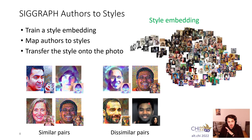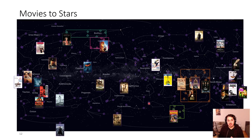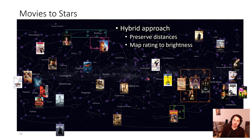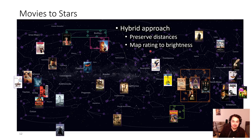We have many more examples in the paper, but now I'll jump to the best example in my opinion: the movies-to-stars metaphor. Here we have taken the top movies and mapped them to stars in the night sky, producing a large infographic. But this is not just a distance-based metaphor — it's a hybrid approach. We preserve distances like before, so similar movies get mapped to nearby stars. But we also ensure that movies with high ratings are mapped to the brightest stars, so the best movies shine in the sky.